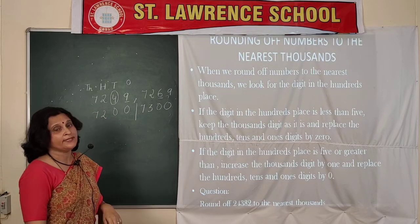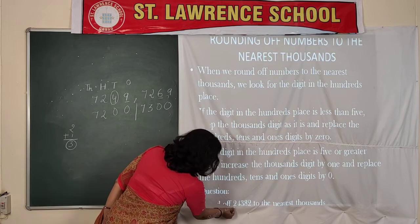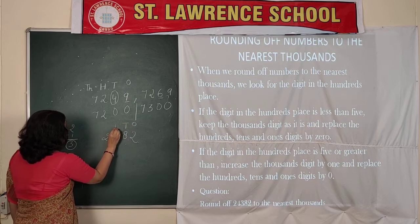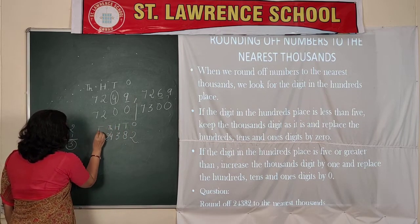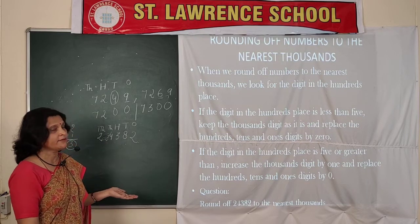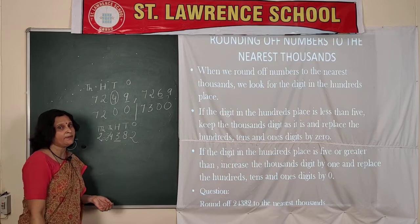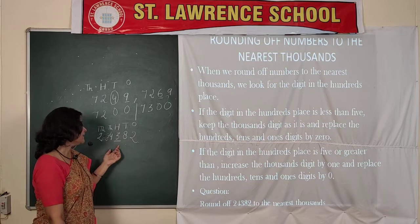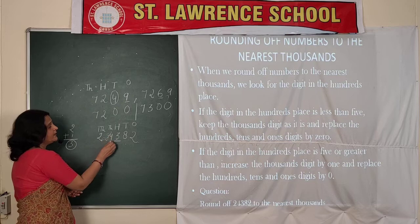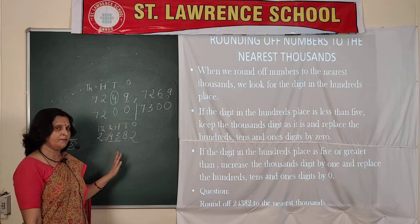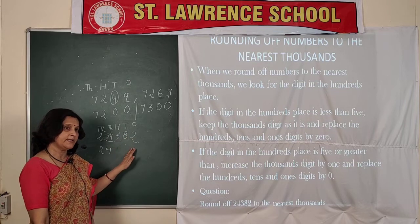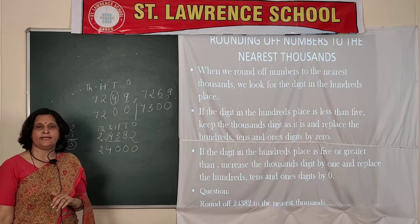Now, rounding off to the nearest thousands. The example given is 24,382. The place values are ones, tens, hundreds, thousands, and ten-thousands. When rounding to the nearest thousands, we look at the digit on the hundreds place, which is 3. Since 3 is less than 5, the thousands digit remains the same, and the digits on the hundreds, tens, and ones places are replaced by 0. So 24,382 is near about 24,000.